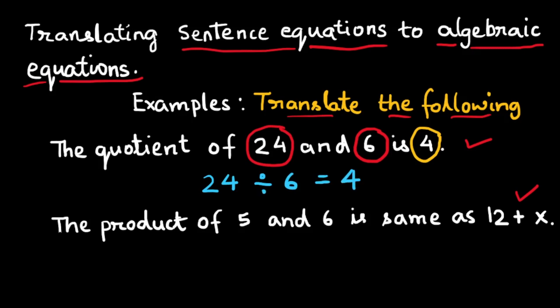The second word equation is expression 5 multiplied to 6 which is 30, equal to another expression 12 plus x.